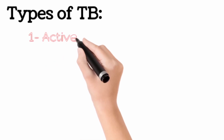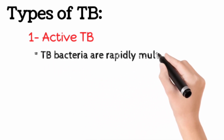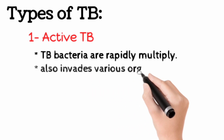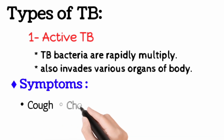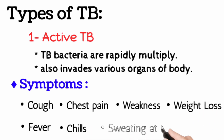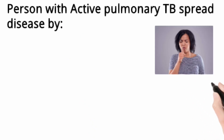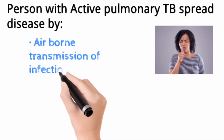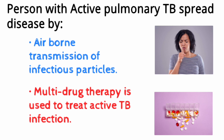Active TB is an illness in which the TB bacteria are rapidly multiplying and invading different organs of the body. The typical symptoms of active TB variably include cough, chest pain, weakness, weight loss, fever, chills, and night sweats. A person with active pulmonary TB disease may spread TB to others by airborne transmission of infectious particles coughed into the air. Multi-drug treatment is employed to treat active TB disease.